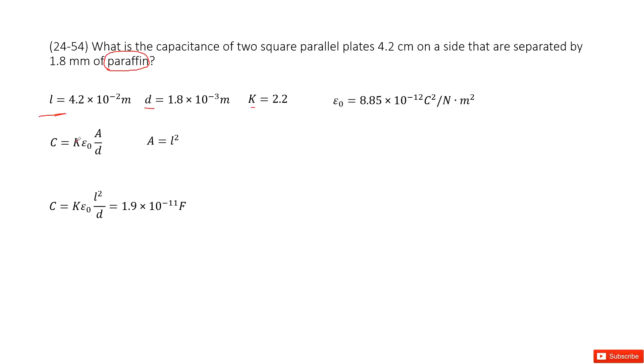Now we look at the equation to find the capacitance. It tells us it's k times epsilon naught times A divided by d, right? So we can say k is given, epsilon naught is a constant. Check your textbook, you can get it there.